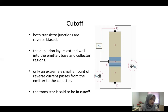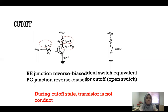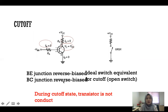That is the difference between the active region, saturation region, and cutoff region. When the BE junction is reverse biased — ideal switch equivalent; when the BC junction is reverse biased, for cutoff it is an open switch; for saturation it is a closed switch. During the cutoff state, the transistor is not conducting.